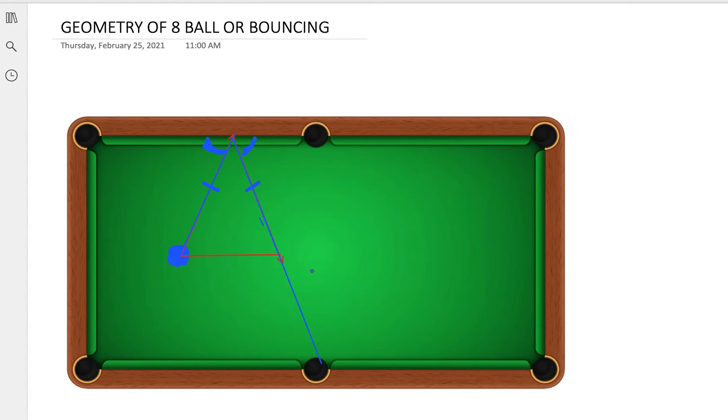So the way or the physics behind it is it's going to always make equal or congruent angles on both sides whenever you hit the table.